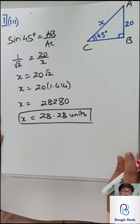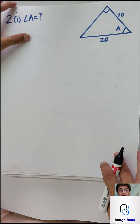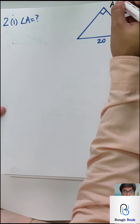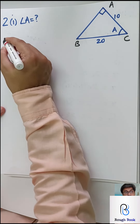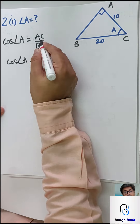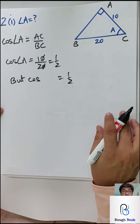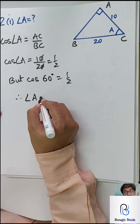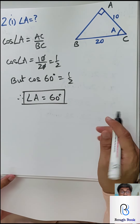If you know the basics, you will rock this chapter. Sum 2 Part 1: they have given you the sides and expect you to find the angles — you have to go reverse. Name it ABC. With respect to A, this is adjacent upon hypotenuse — that's cos. So cos angle A equals AC upon BC: AC is 10 and BC is 20, giving half. Cos of what angle is half? Looking at the table: cos 60 is half. Therefore angle A equals 60 degrees.